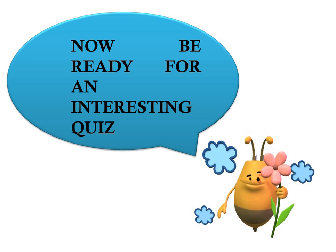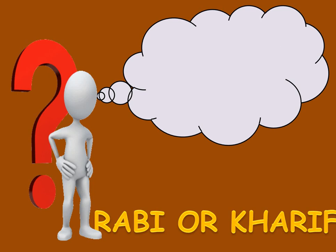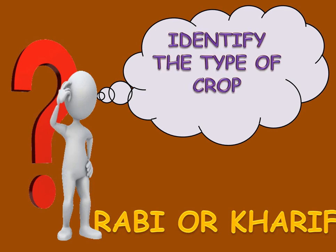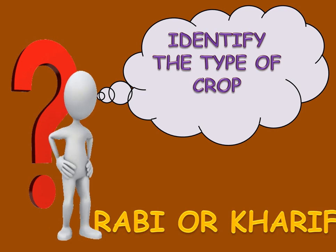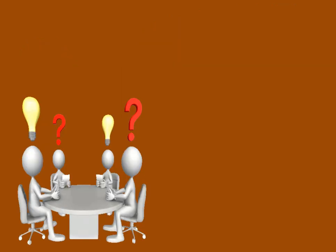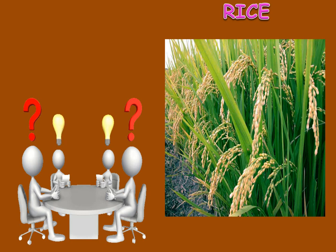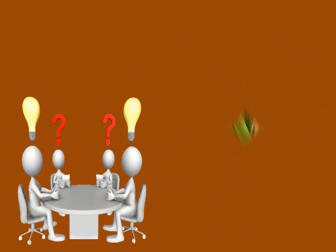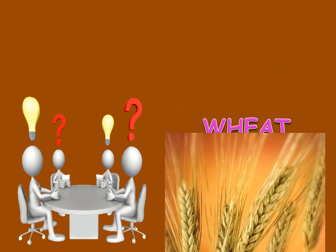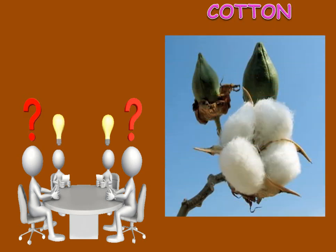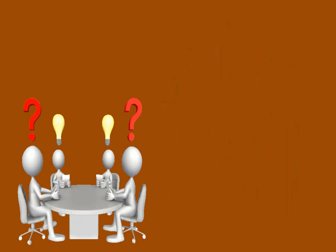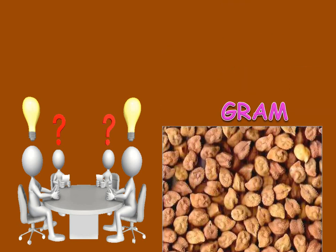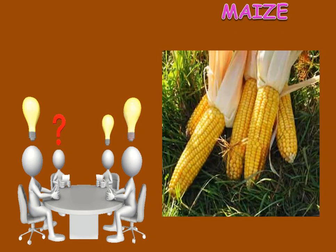Now, be ready for an interesting quiz. You have to identify the type of crop — Rabi crop or Kharif crop? Rice, wheat, cotton, pea, gram, maize.